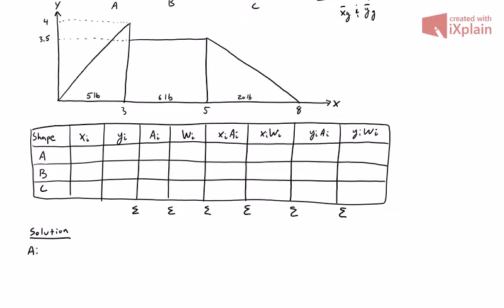Starting with shape A, which is a right triangle. We can draw the centroid on the figure. For a right triangle oriented this way, the x position of the centroid is two-thirds the base: two times three over three equals two. The y position is height over three: four over three gives us 1.33. The area of the triangle is one-half base times height — one-half times three times four — which equals six.